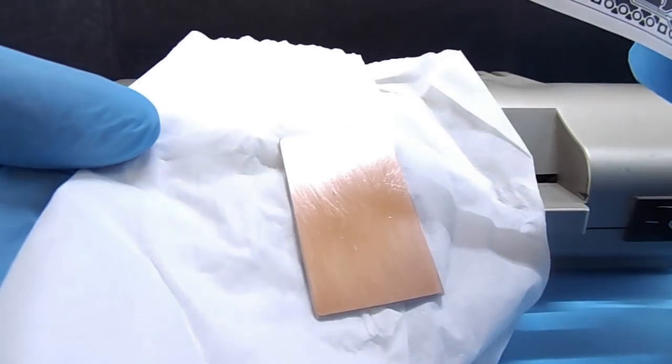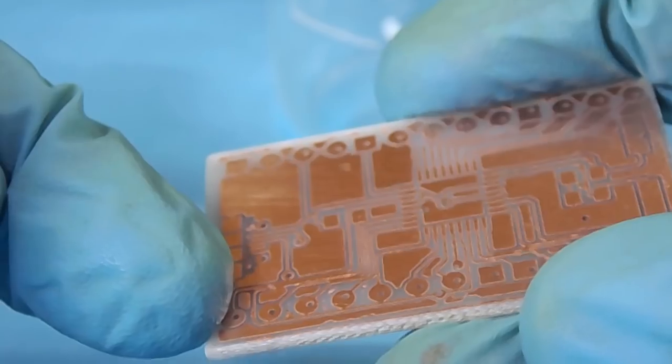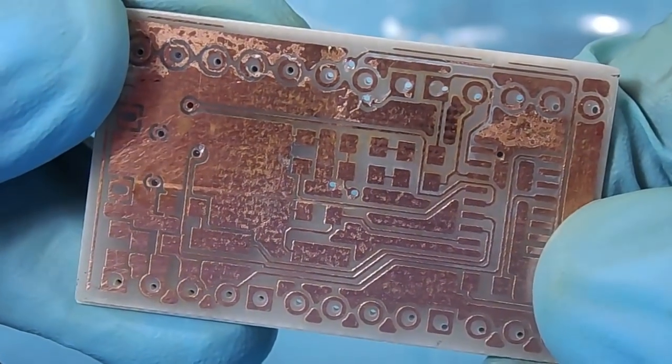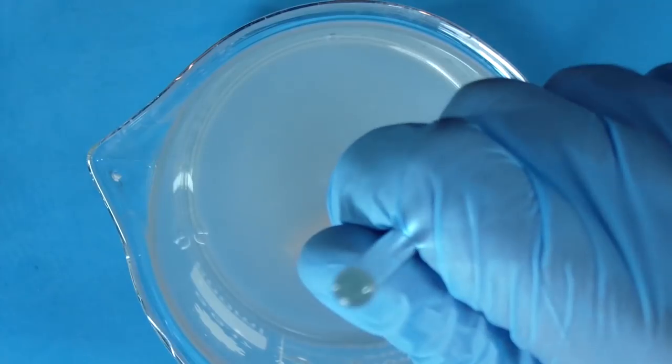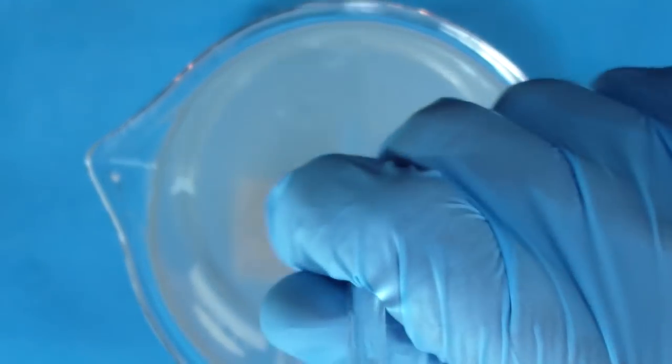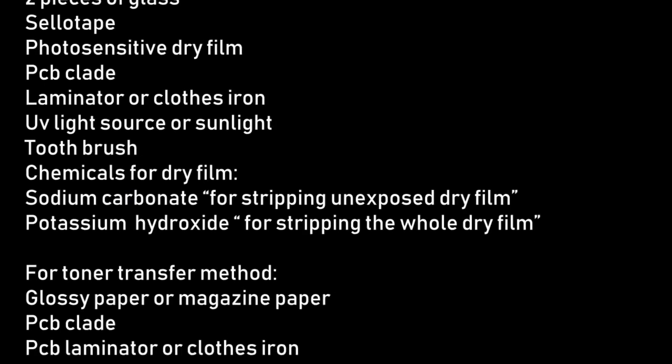The other method here is toner transfer. It's a very simple method but it gives unclear traces and sometimes the acid attacks copper underneath the toner, giving cracked traces that will be a headache to detect. In this video I will talk about tin immersion solution and how to prepare it. Let's move to materials and tools. I will display them here quickly but you can check it out in the description.